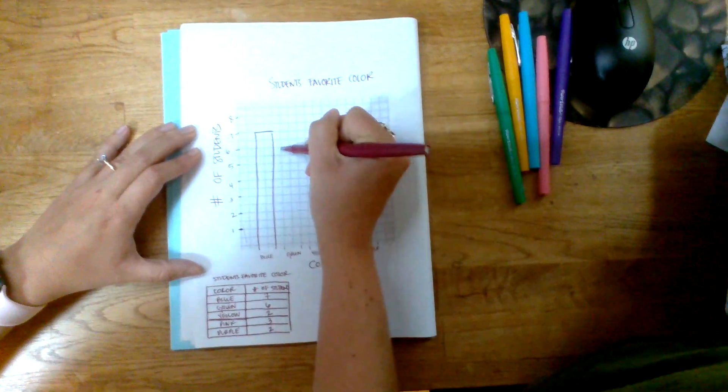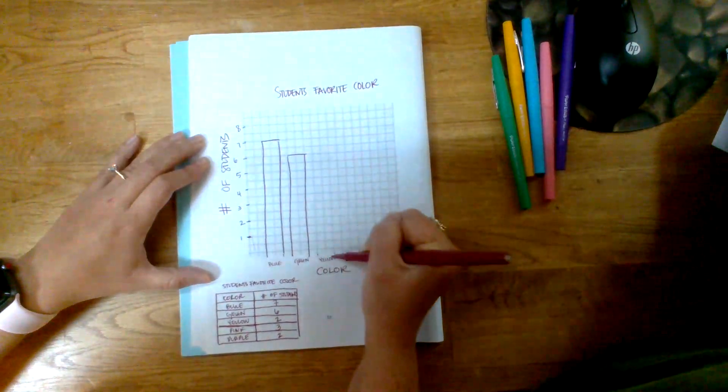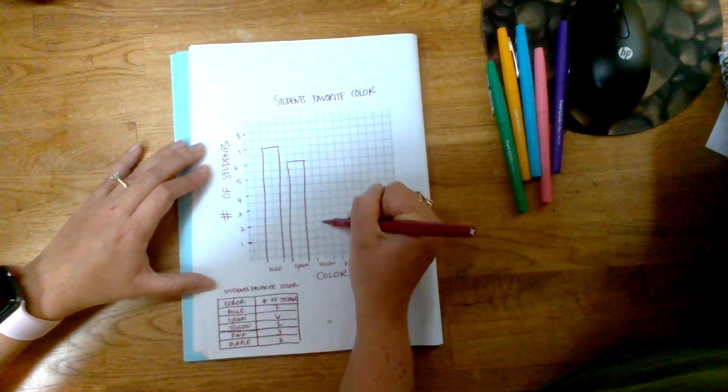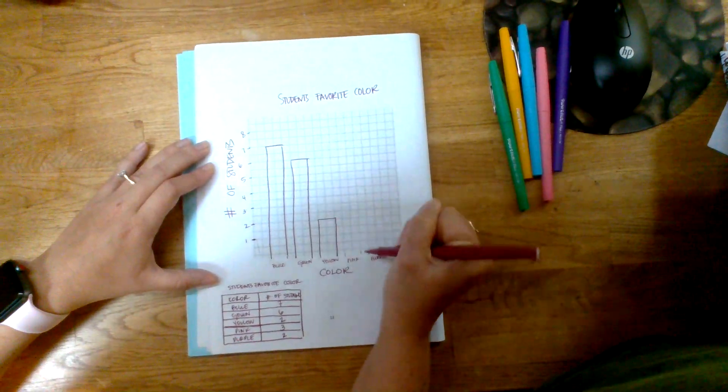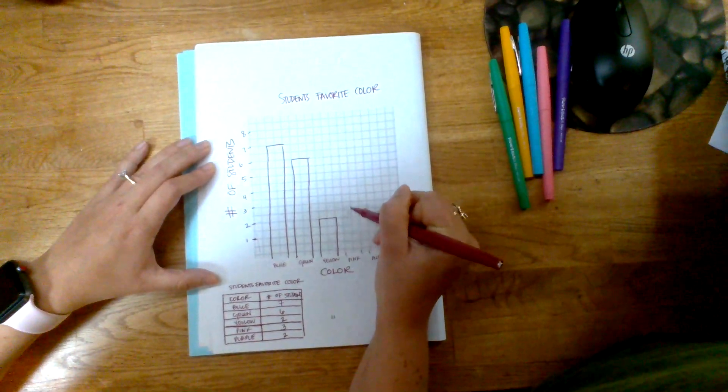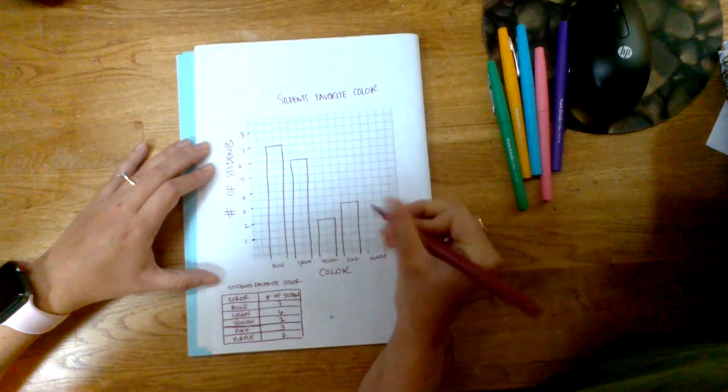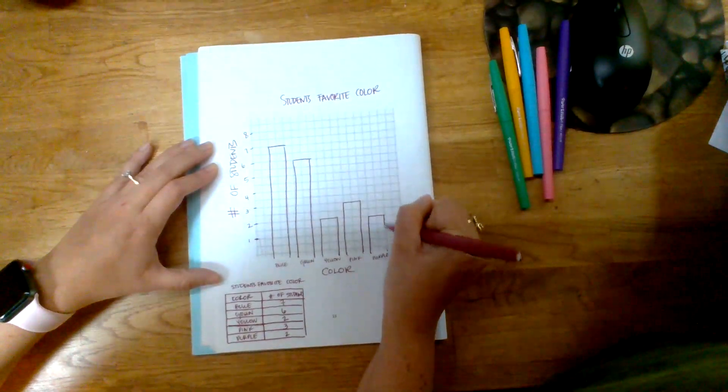The next group was yellow: two, so it's going to be right here. Pink—three people liked the color pink, so I'm going to find three. And then purple was also two people, so that's easy. I can just look at the yellow.